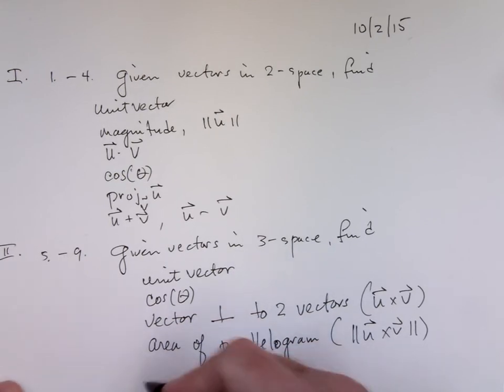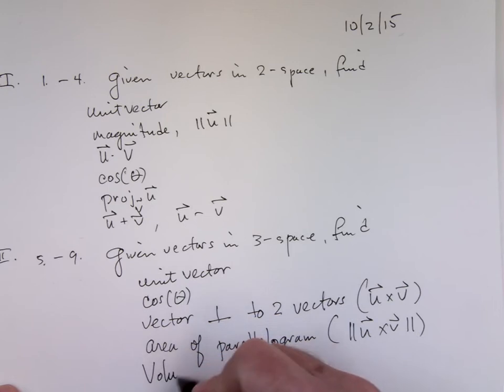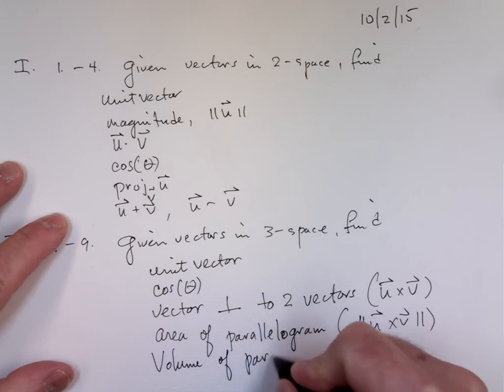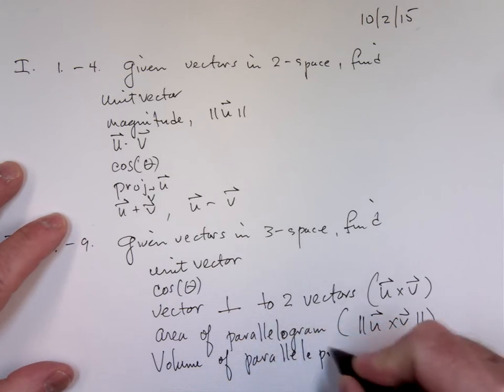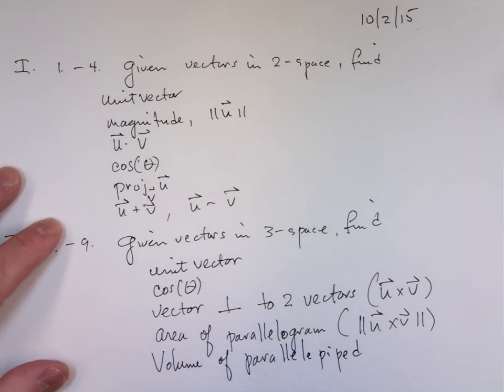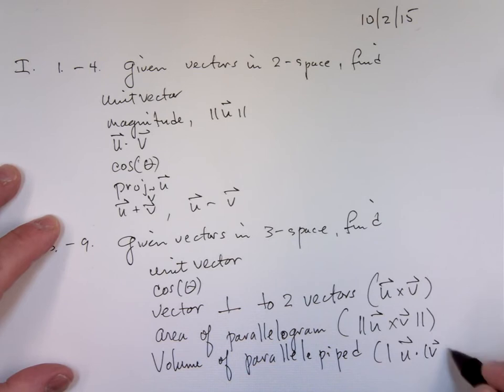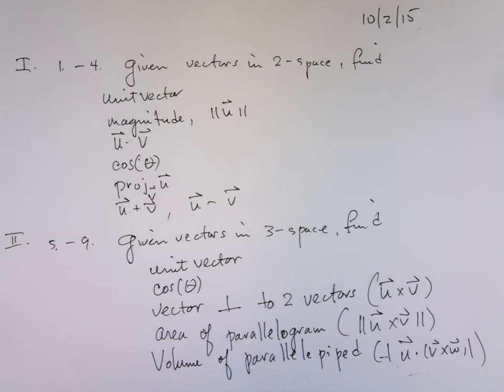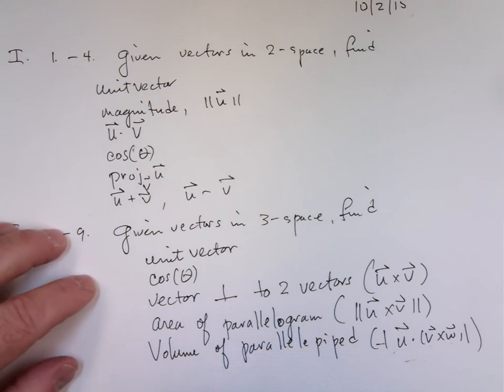I may ask you for the height and volume, the volume of the parallelogram pipette, which is their triple scalar product. Triple scalar product here, in any order. Take the absolute value because you may get a negative number depending on the order that you do things. And I may ask for the height of that parallel pipette.